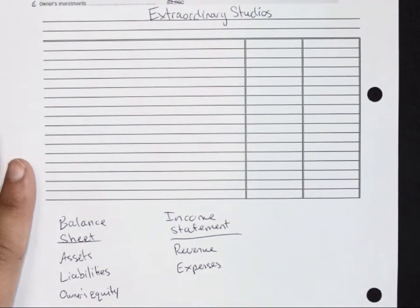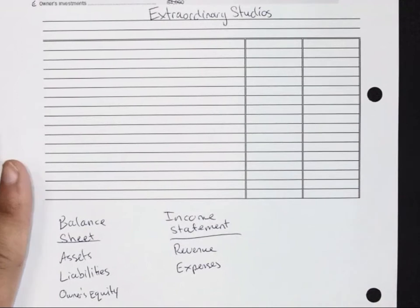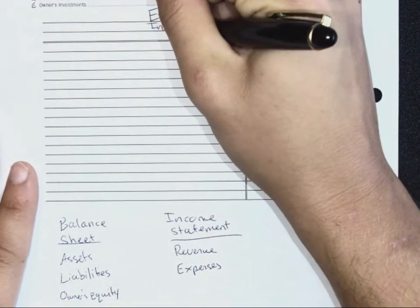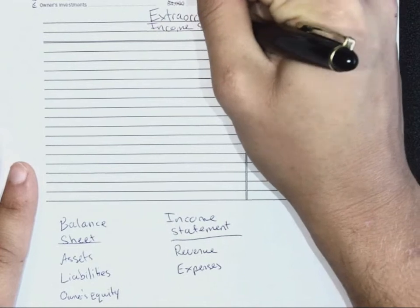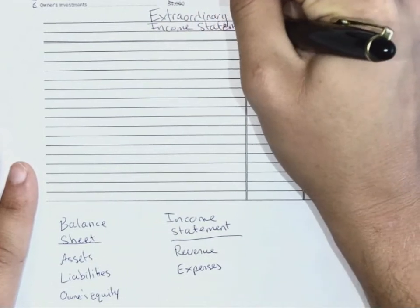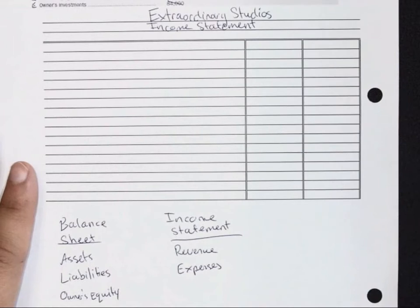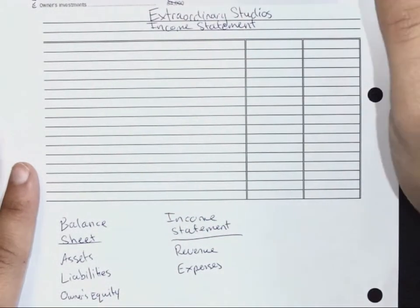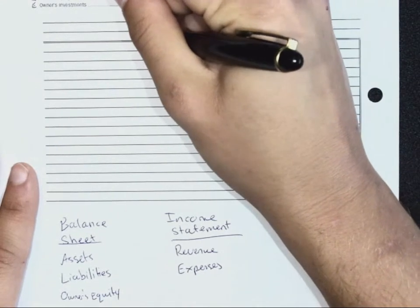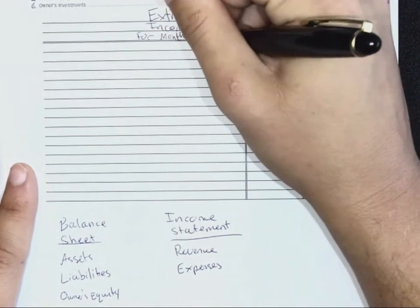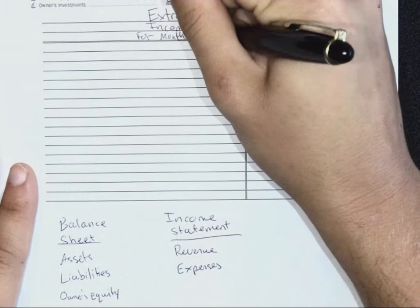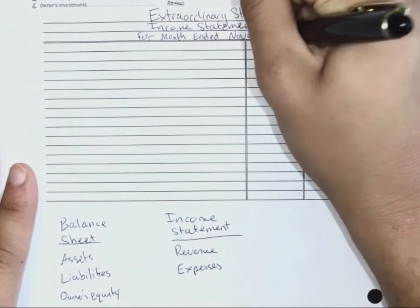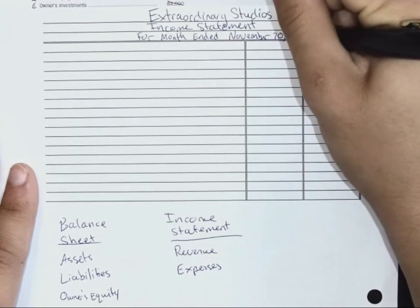The second line is what type of statement it is — what is the statement. And the third line is the date. So this is for November, which means we would write: For Month Ended November 30th, 2017.